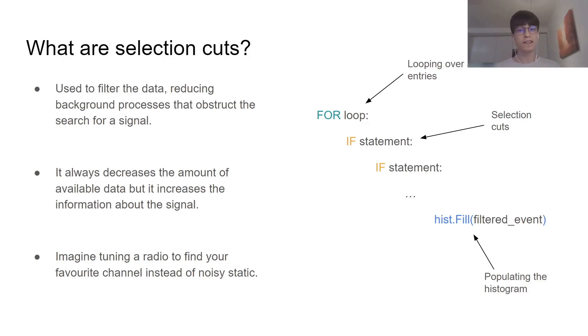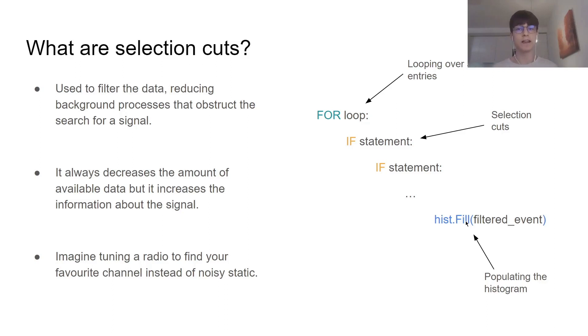In Python, this is stated with a for loop that loops over all the entries of our data. Then, with if statements, there are our proper selection cuts, essentially letting the data pass or not, so that at the end, we can do hist.fill to populate our histogram with all of the filtered data.